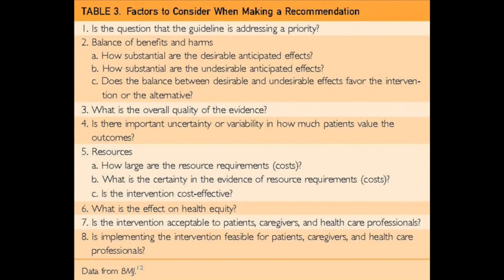Following this framework, we can reach a final determination of the quality of evidence. For transforming evidence into a recommendation, there are also explicit factors that help us in making this transition. These factors include patients' values and preferences, availability of resources and cost, and the balance between benefits and harms, as well as other factors such as acceptability of the intervention by patients and physicians, equity, and feasibility of the intervention.